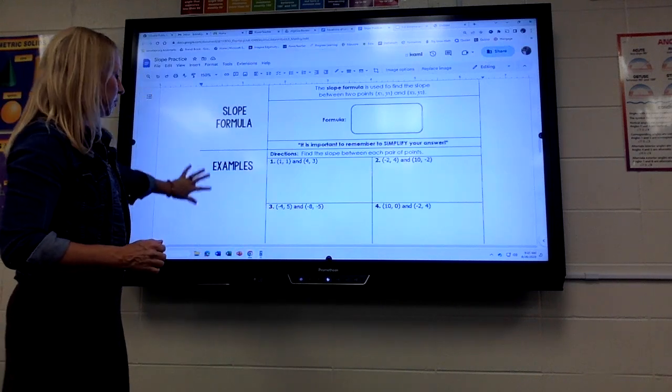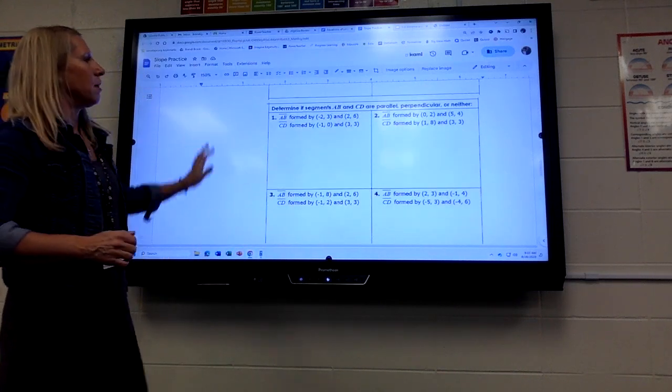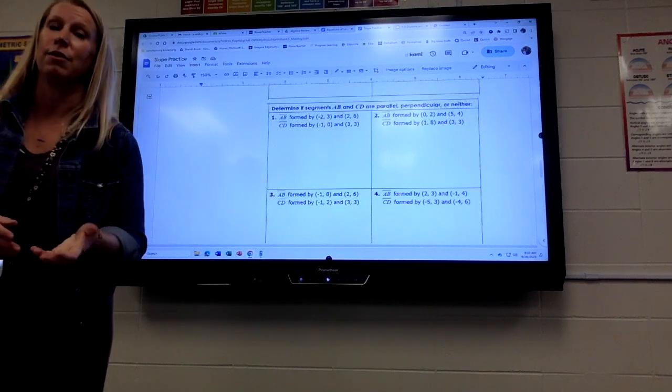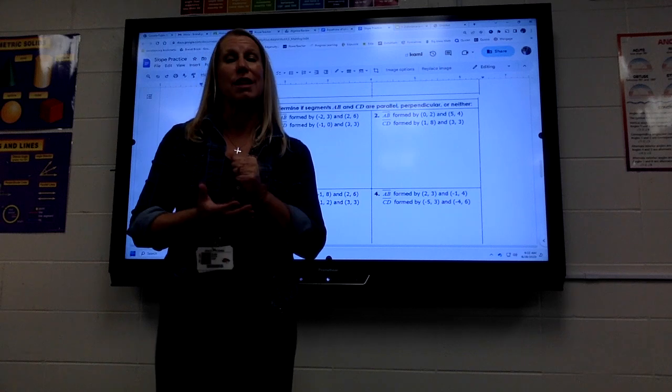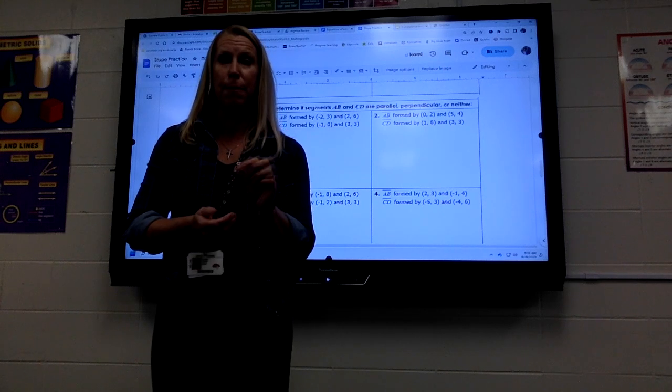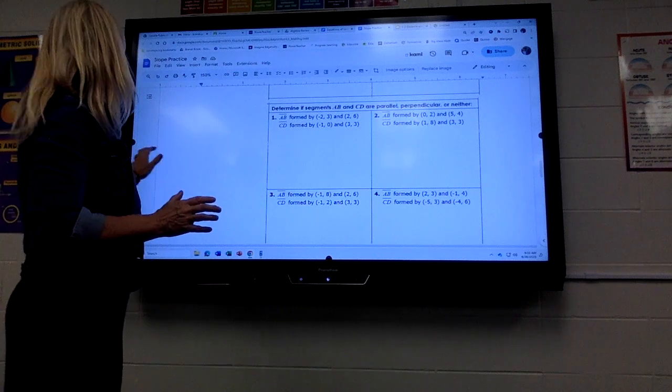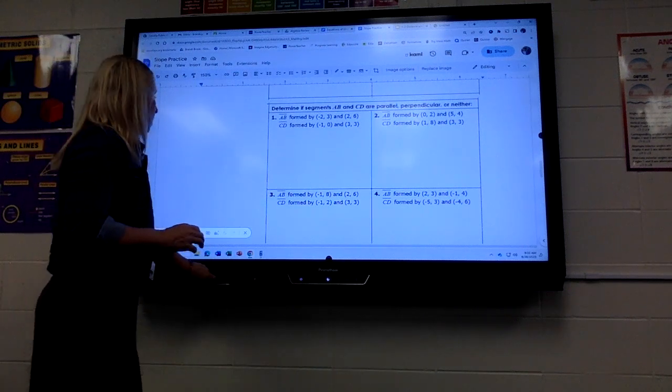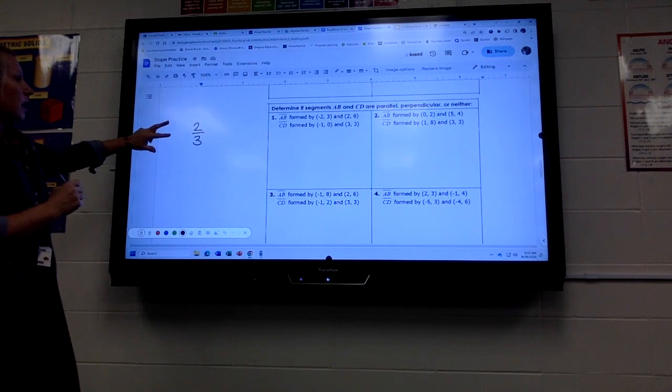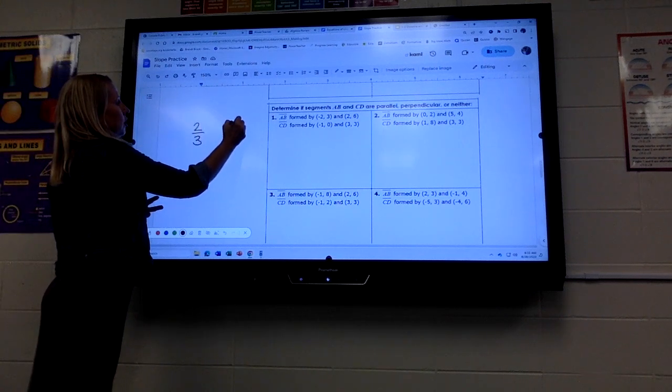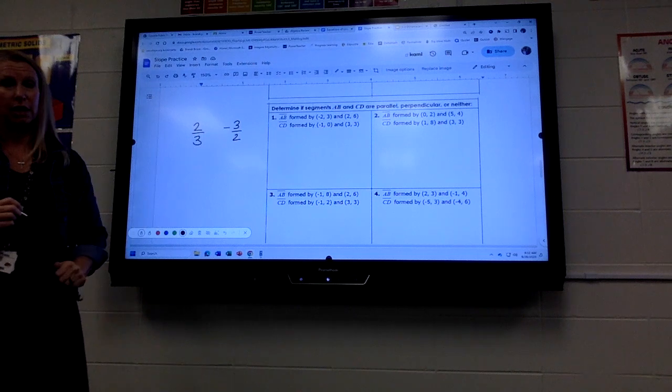So hopefully that helps with those. Okay, the very last section, we have to decide whether the lines are parallel, perpendicular, or neither. So if the slopes are exactly the same, they're parallel. If they're opposite reciprocals, like for example, if I have 2 thirds positive, if I flip that upside down and change the sign, that would be perpendicular.